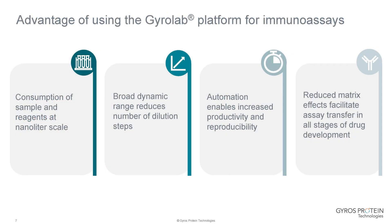The advantages of using the Gyrolab platform for immunoassays include nanolitre scale consumption of both reagents and samples. It gives a broad dynamic range and reduces the number of dilution steps in the assay. It involves automation, enabling increased productivity and reproducibility, and reduced matrix effects facilitate assay transfer at all stages of drug development.